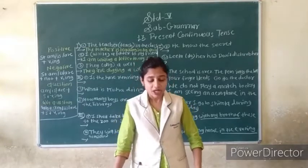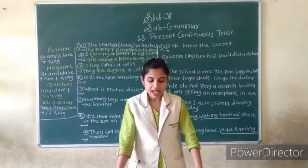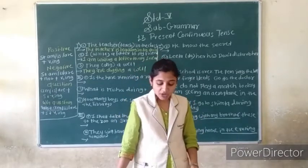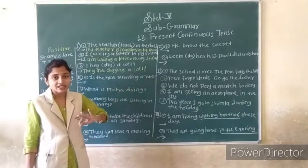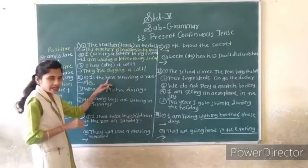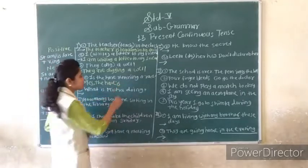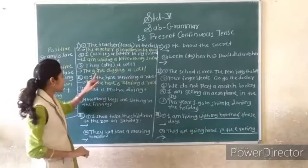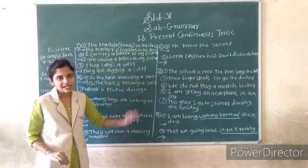Now second question on page number 32: Answer the following questions in complete sentences. First question: Is the hare running a race? Yes. The hare is running a race. Second question: What is Nisha doing? This is a WH question. Nisha is doing her homework. Like this you can solve it.